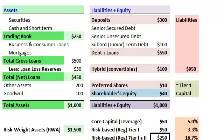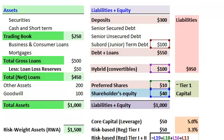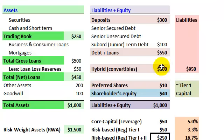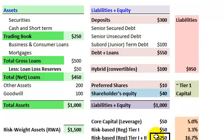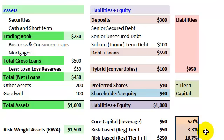Finally, the Tier 1 plus 2 ratio. In the numerator, this is the buffer available to absorb losses, and it can include the hybrid instruments and subordinated term debt — so some of these other instruments are available to absorb losses as well. Tier 1 plus 2 provides more buffer, and divided by the risk-weighted assets gives us a Tier 1 plus 2 regulatory risk-based ratio of 16.7%. There are many details that go into the specific calculations, but this gives you a general sense. This is David Harper of Bionic Turtle — thanks for your time.